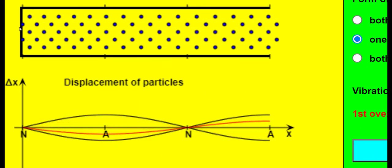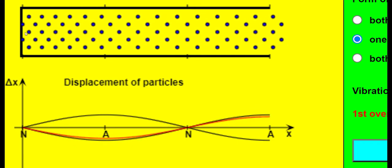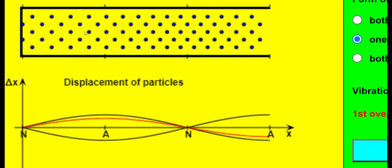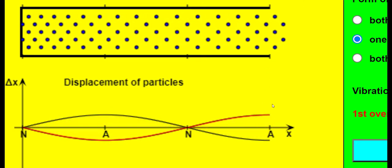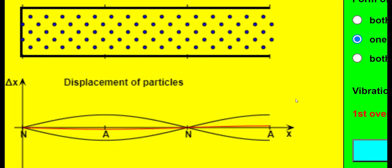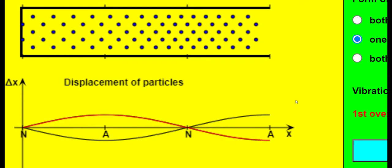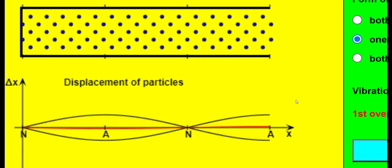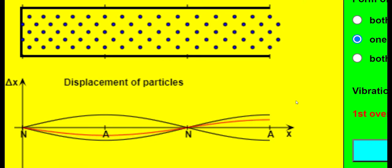As before, we can see a node at the closed left end and an anti-node at the right open end. This is true for all stationary waves that form in such tubes. A node forms at the closed end and an anti-node is present at the open end.